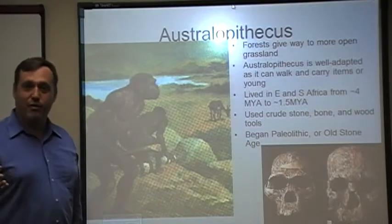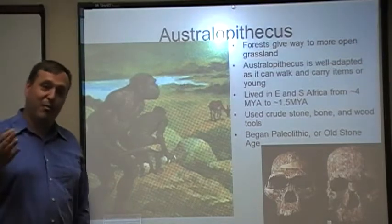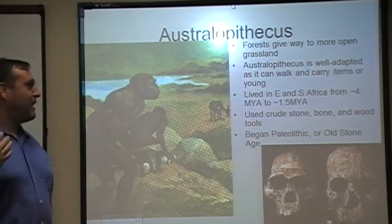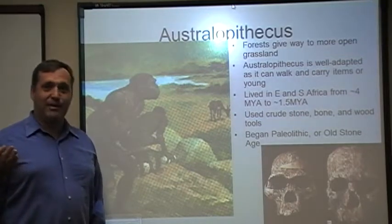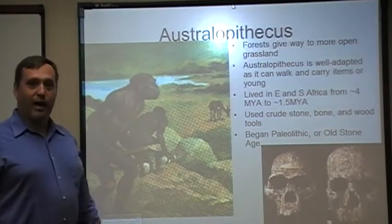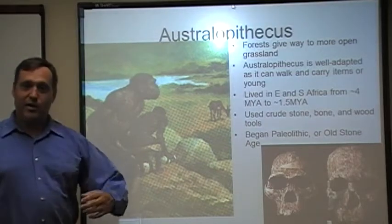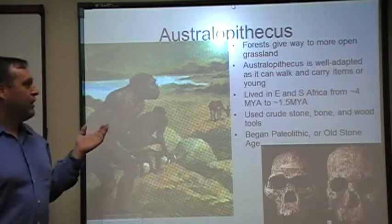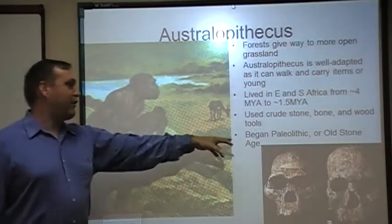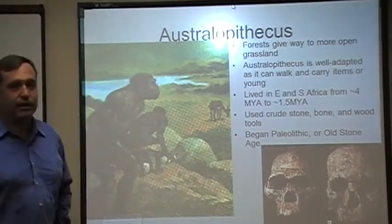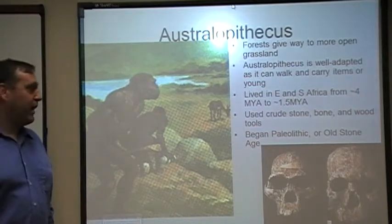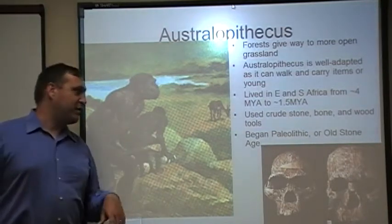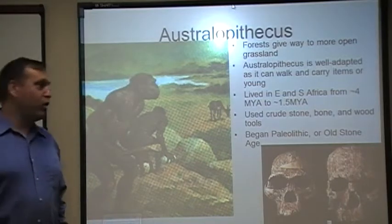Nobody tell Al Gore that the Earth changes its climate all by itself — because it totally does. Now the Australopithecus is a pretty well-adapted little hominid because it can walk upright and carry items, carry its young, or carry tools. We're also going to see that this is the beginning of what we call the Stone Age, often referred to in Greek as the Paleolithic — Paleo meaning old and lithic meaning stone. We've got evidence of use of crude stone, bone, and wood tools.